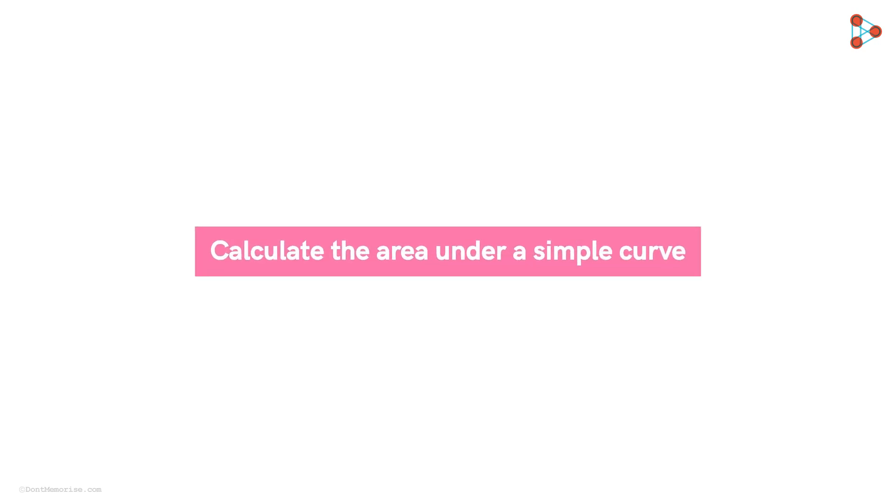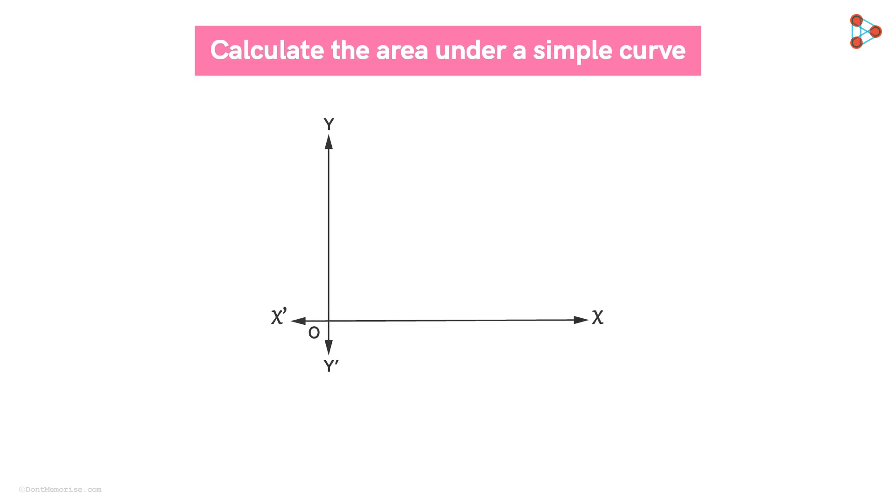So how do you calculate the area under a simple curve? Let's understand. Now consider a curve given by Y equal to F of X. We have to find the area bounded by this curve, the X axis and the coordinates X equal to A and X equal to B.